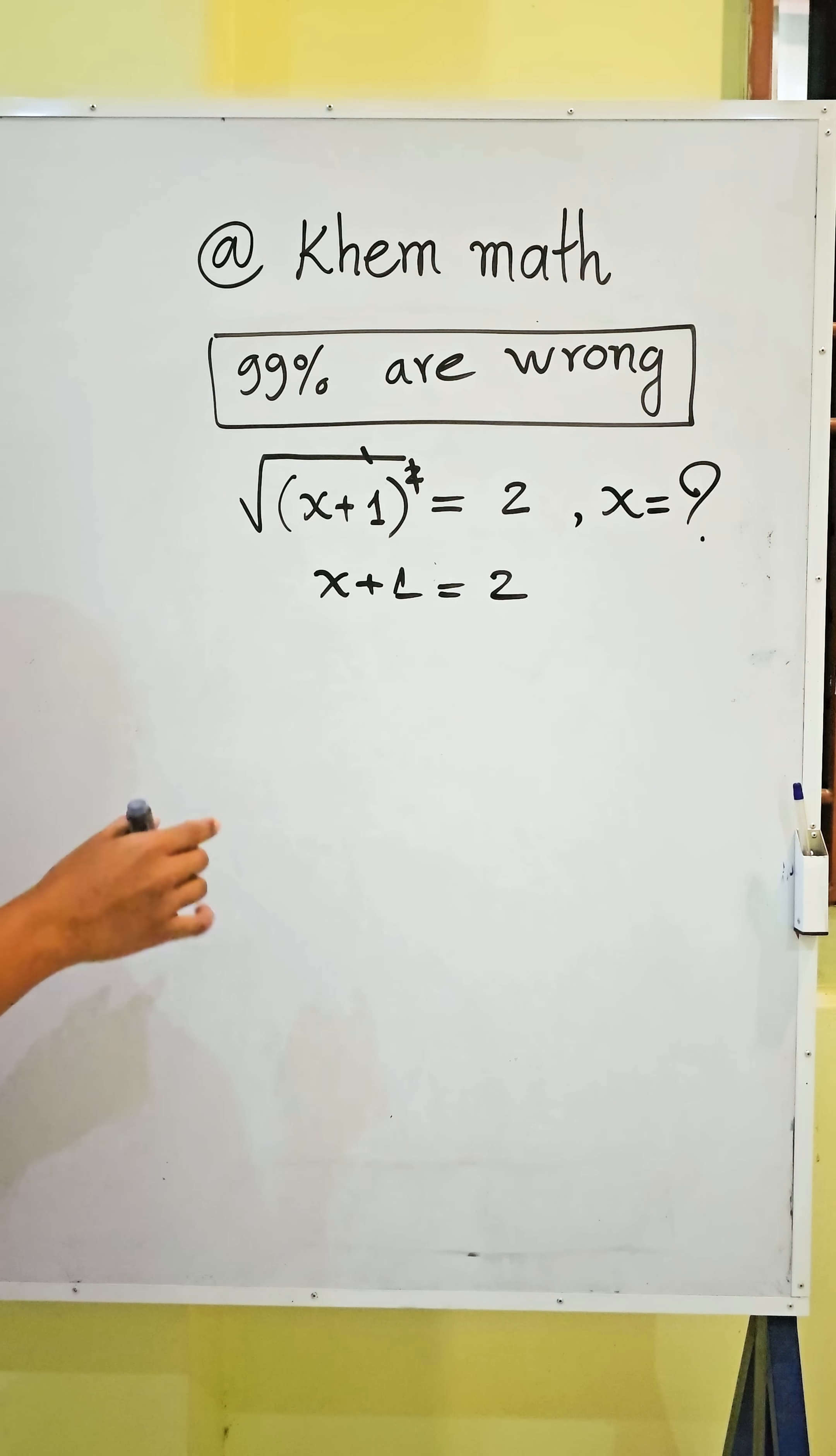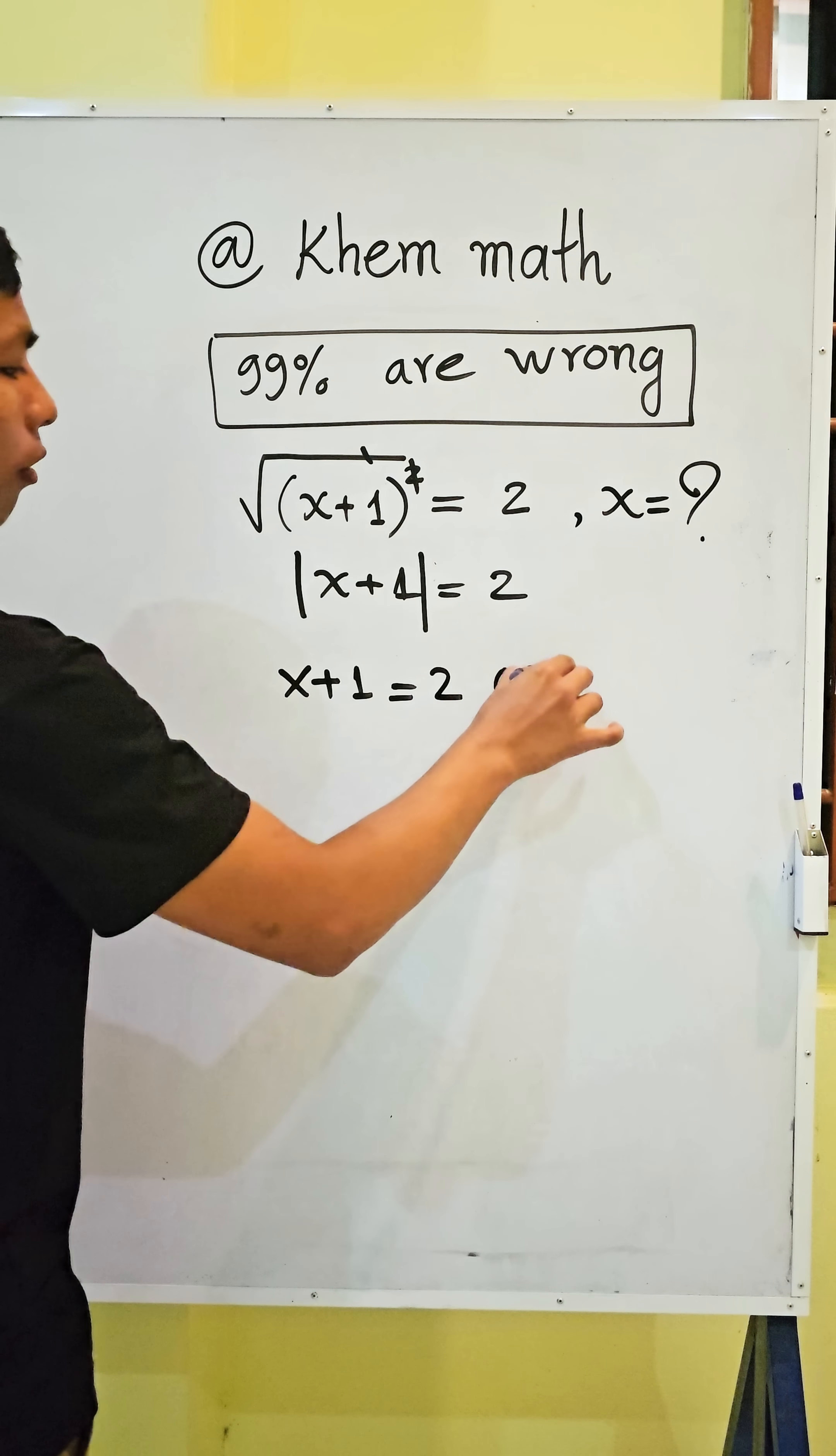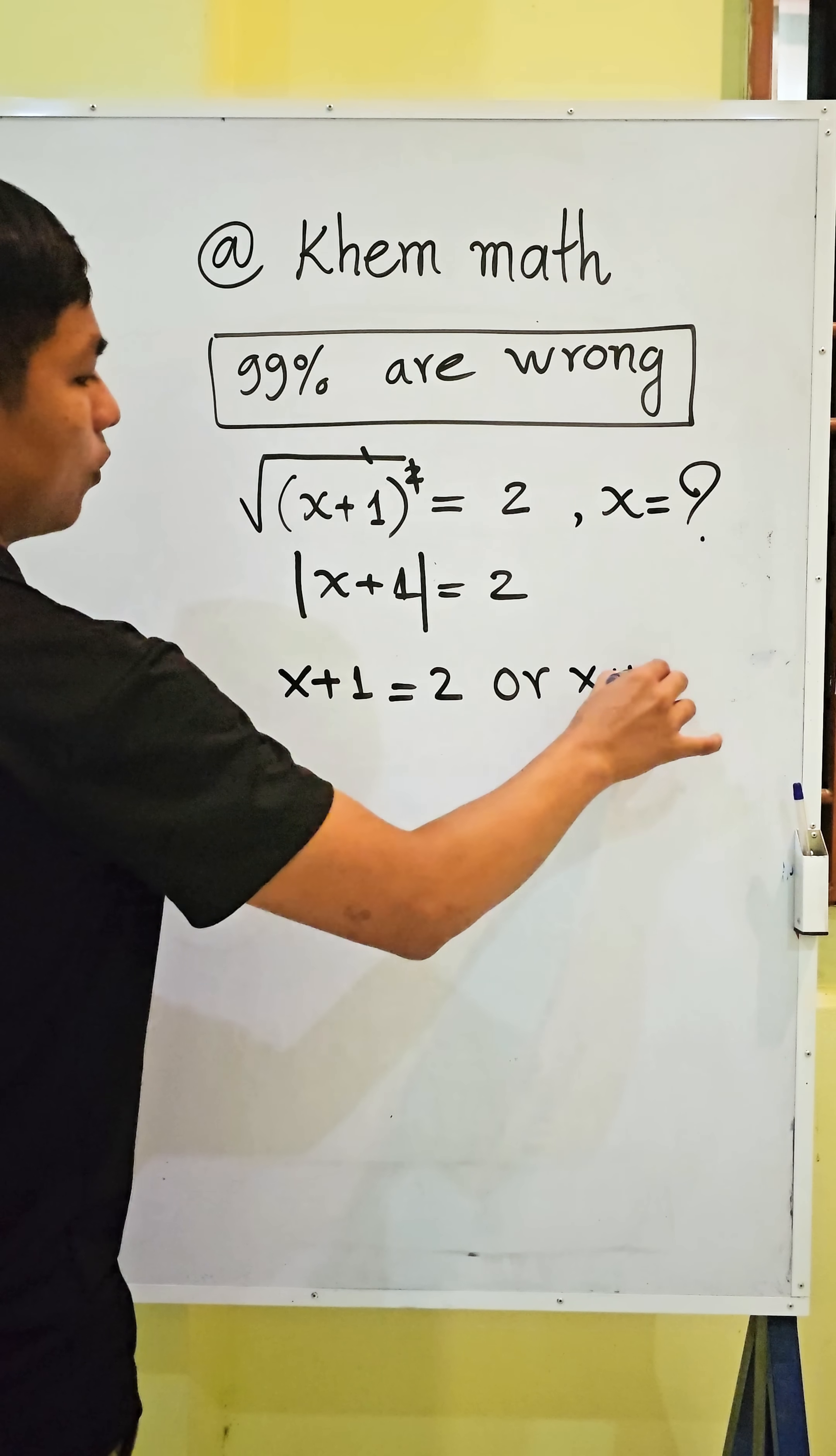You know, here this index is 2. So remember the absolute value. Okay, so here we get this x plus 1 equal to 2 or x plus 1 equal negative 2.